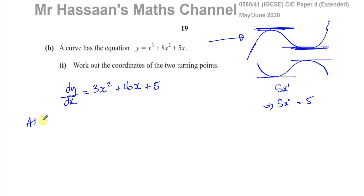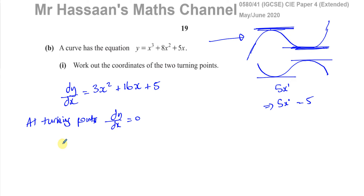At the turning points, the important fact is that dy/dx is equal to 0 — the gradient is equal to 0. So we can equate this to 0: 3x² + 16x + 5 = 0.